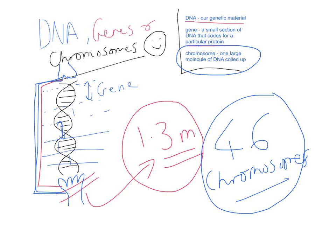And that is the simple difference between the three. DNA is our genetic material — it's what makes us who we are. A gene is simply a small section of that DNA. And a chromosome is one large molecule of DNA, all of it curled up nice and tight. Okay, hope that helps.